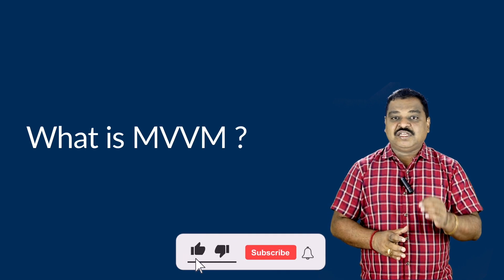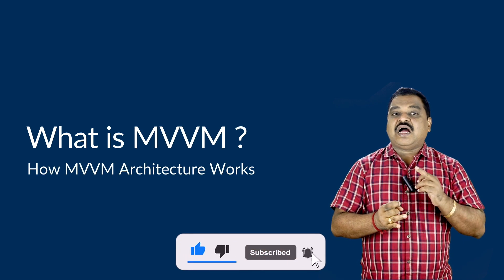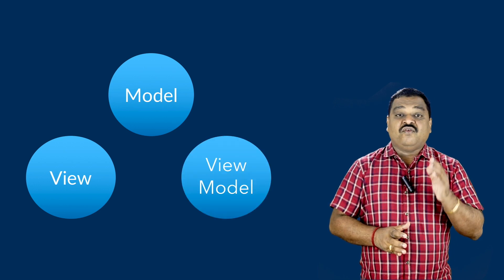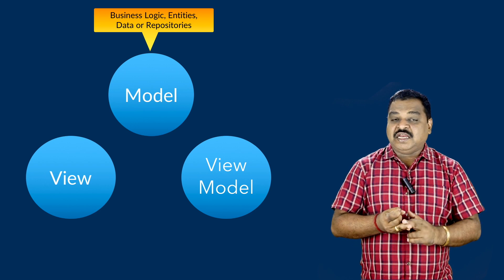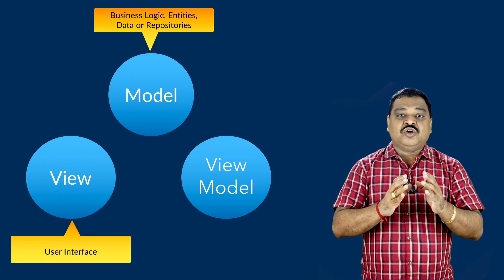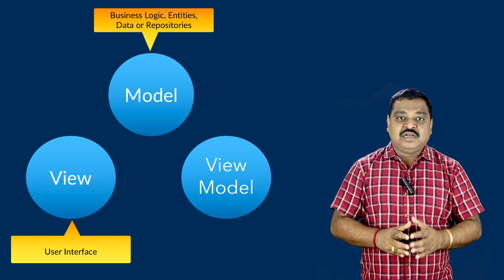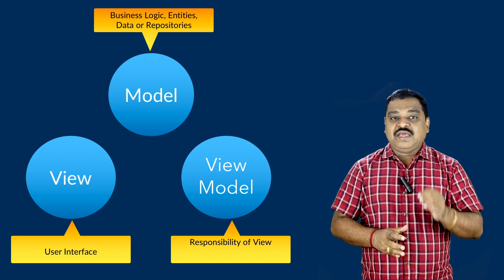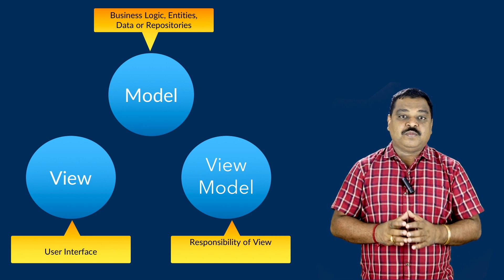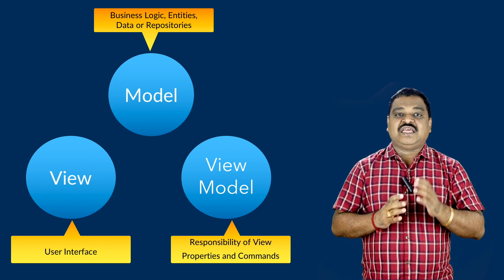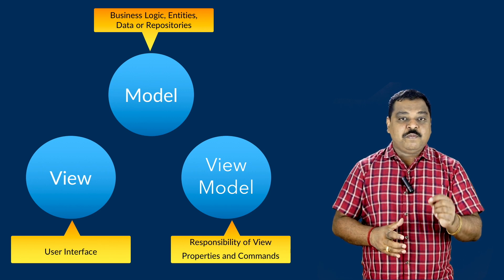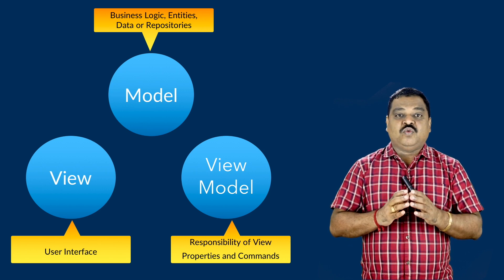In this video we shall understand what MVVM is and how MVVM architecture works. MVVM stands for Model, View, and ViewModel. Model represents the business logic, entities, data, or repositories. View represents the user interface displayed to end users. The ViewModel takes responsibility for the view, exposing data to the view using properties and handling events such as button clicks using commands.